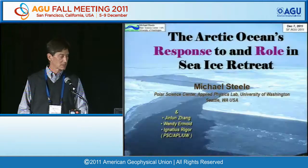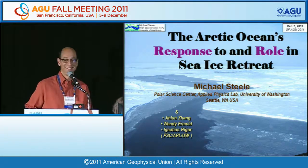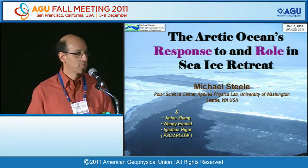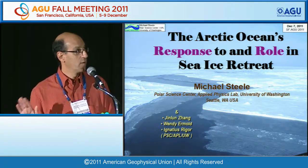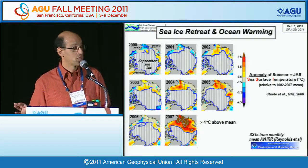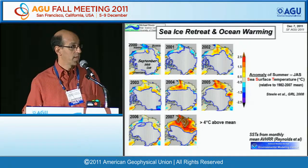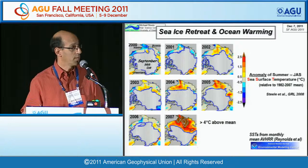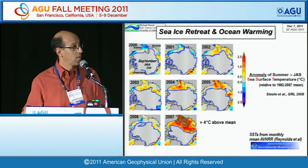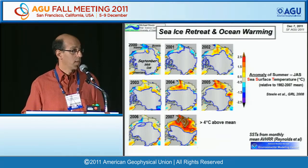The next speaker is Michael Steele on the Arctic Ocean's response to and role in sea ice retreat. Sea ice is retreating and as a result the upper ocean is warming. These panels show September sea ice cover and the anomaly of summertime sea surface temperature as diagnosed by satellite data. You can see coldish anomalies near Alaska and far eastern Russia in early years, then warm water in 2002-2005, and then very strong warming in response to sea ice retreat.